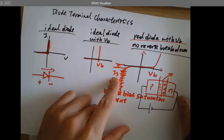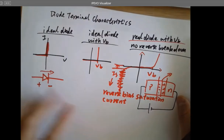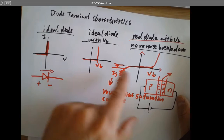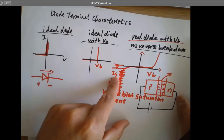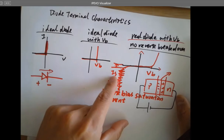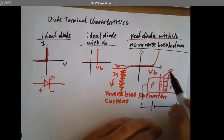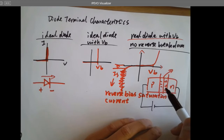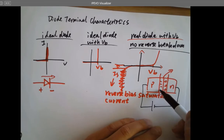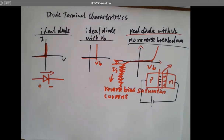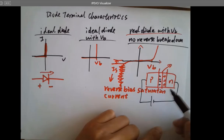One more time: what is IS? It's a reverse bias saturation current. From where to where? What's the direction of IS? So there are two currents flowing in the diode — what are these two currents?